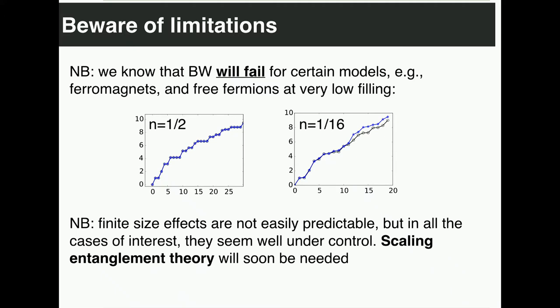There are also limitations. The Bisognano-Wichmann theorem relies on Lorentz invariance, which in ground states of physical systems essentially means the spectrum has to be approximately linear. We want to check a case where our technique does not work. It's simple: take free fermions at very low densities. At very low densities the spectrum is not linear anymore — it's essentially quadratic. And indeed, for a 1D model of 32 sites, at half filling we get perfect agreement, but at filling 1/16 we start seeing consistent disagreement, and at some point the two lines completely decouple. So one has to be careful applying this technique — there are limitations related to the microscopic theory.